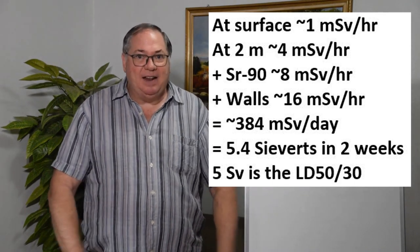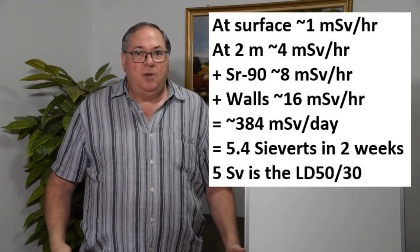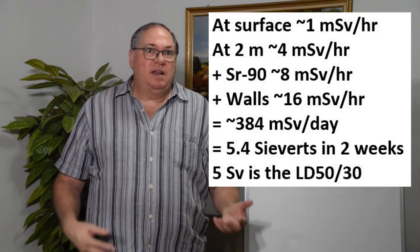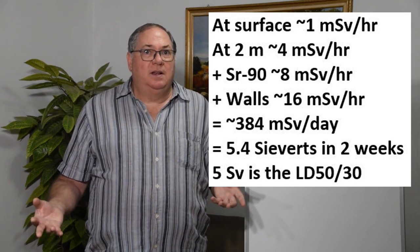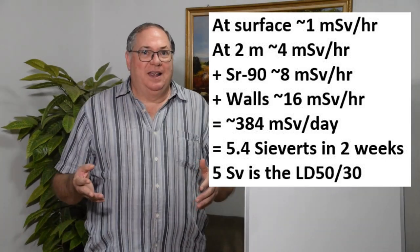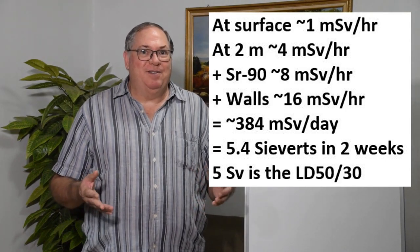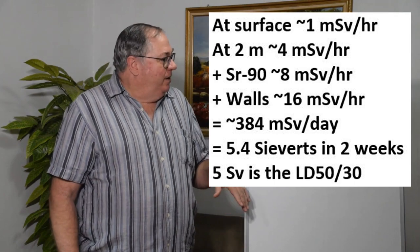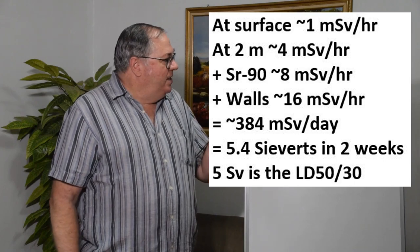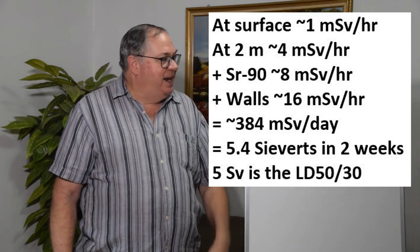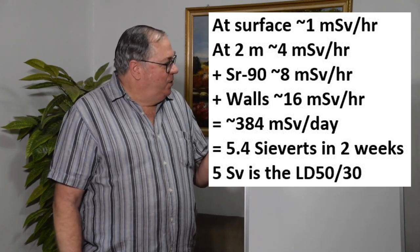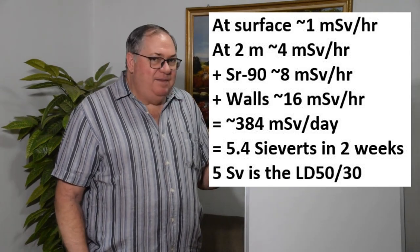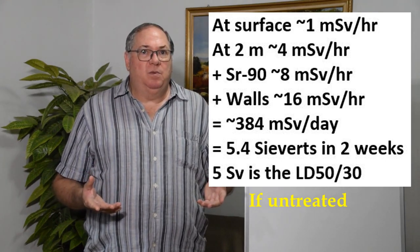And then now instead of standing on flat ground, which is like a plane source, you have walls beside you that have contamination in them. And the walls are contaminated so you're being radiated from all sides. So all of a sudden you could have two or three times the exposure from that. So once again using RadCon math, we can say 16 millisieverts per hour inside a trench. Well, if you're in the trench for 24 hours a day, that's 384 millisieverts per day. And if you're there for two weeks, that's 5.4 sieverts of exposure, potentially. So 5 sieverts is known as the LD50/30. 50% of the people will die within 30 days.